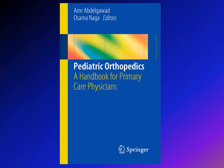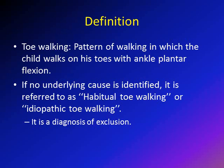A good source that you can use is this book, A Pediatric Orthopedic Handbook for Primary Care Physicians, written by myself and Dr. Naga. What is the definition of toe walking? Toe walking is a pattern of gait in which the child walks on his toes with the ankle plantar flexed. If there is no underlying cause that can be identified, the condition is usually referred to as habitual toe walking or idiopathic toe walking.